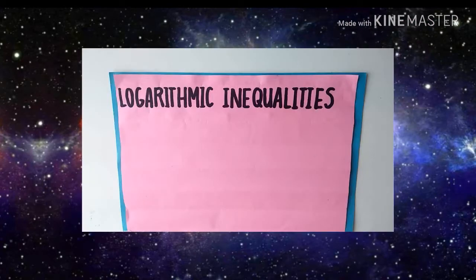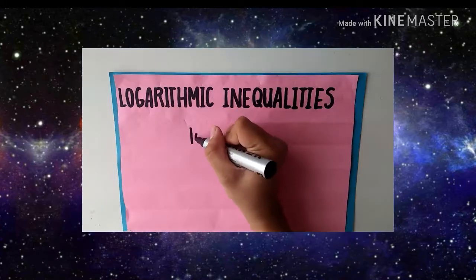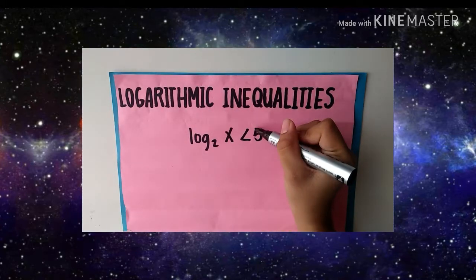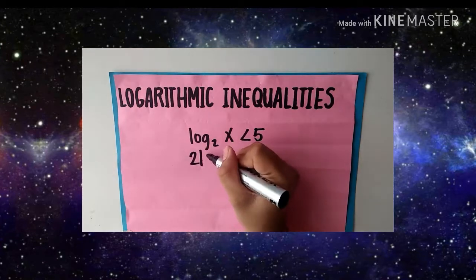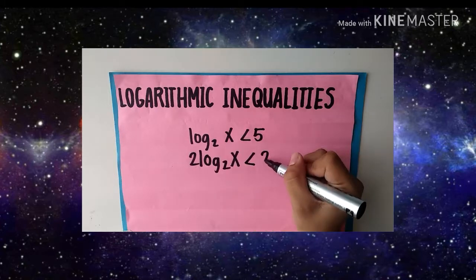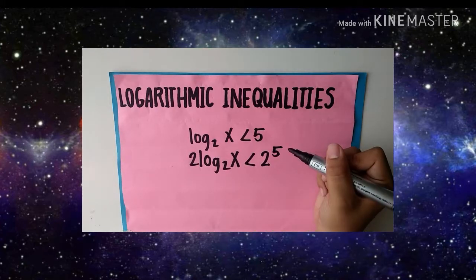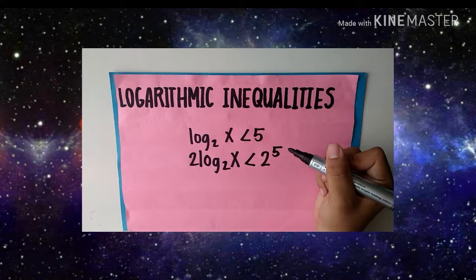For logarithmic inequalities: log base 2 of x is less than 5. Copy the base on both sides so that 2 to the power of log base 2 of x is less than 2 to the power of 5. Since log base 2 and base 2 cancel each other, the remaining term is x. So x is less than 2 to the power of 5, which simplifies to x is less than 32. That is the final answer.